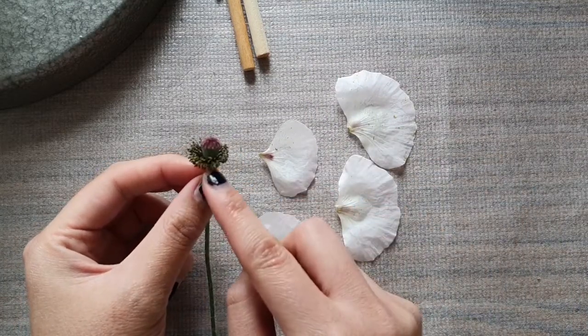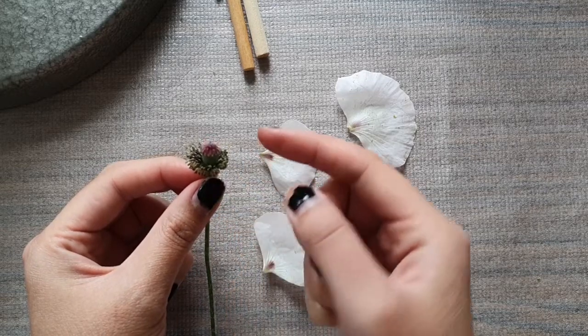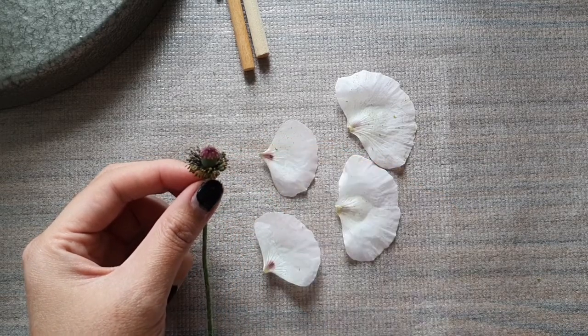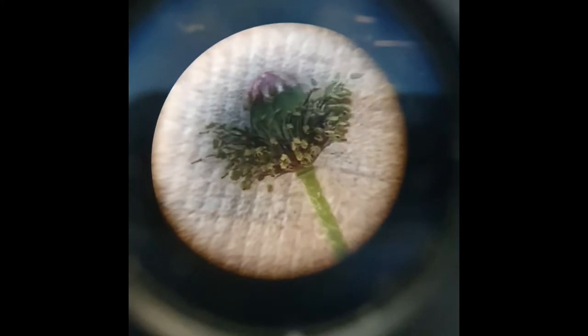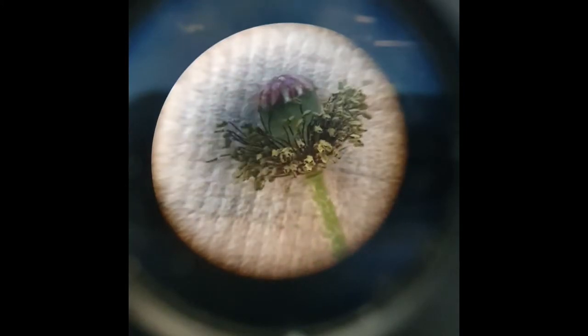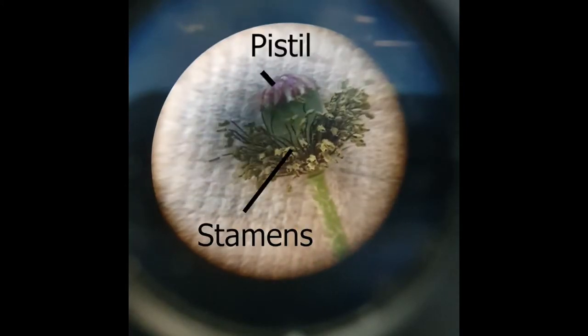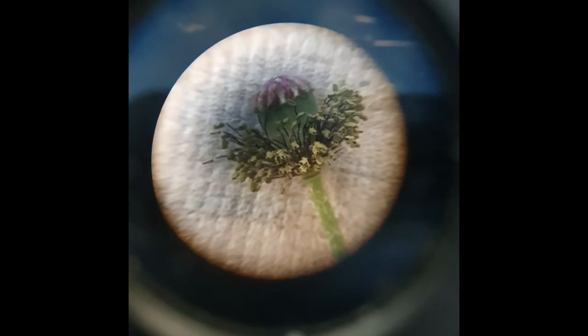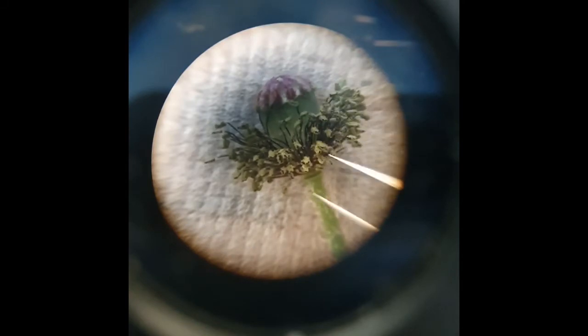The next two layers of the flower are the stamens and the pistil. We'll take a closer look under the scope. The stamens consist of anthers on filaments which support them, and the pistil is interior to the stamens.